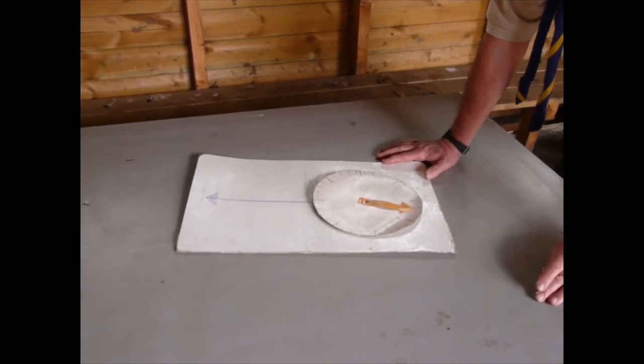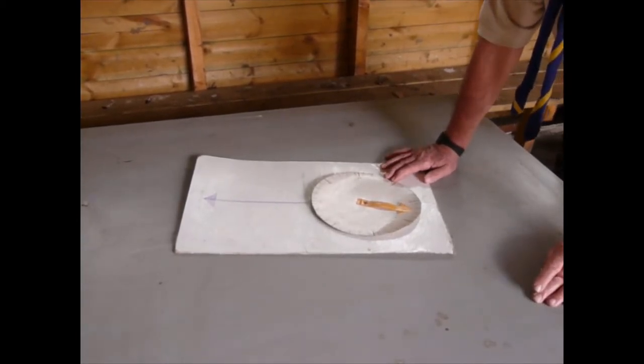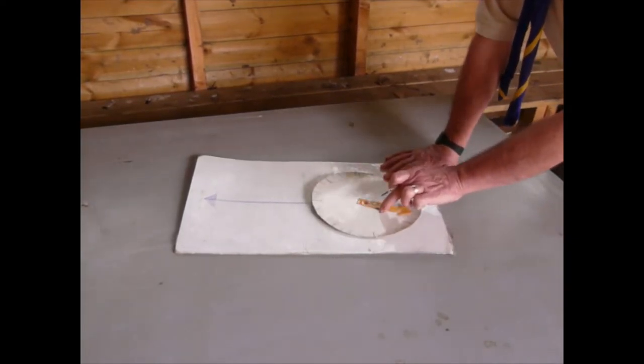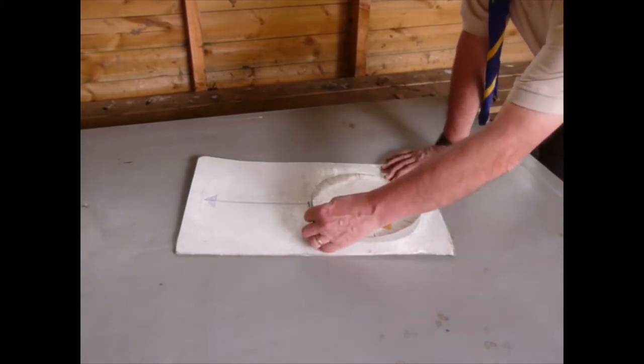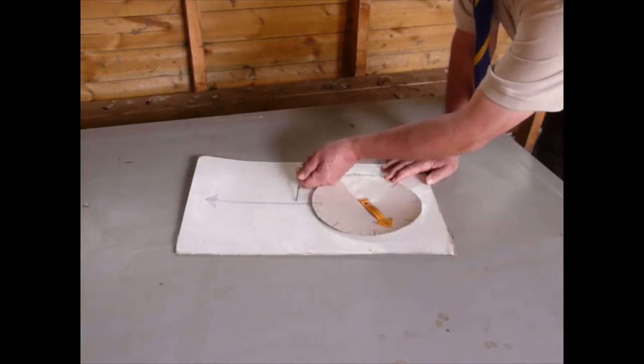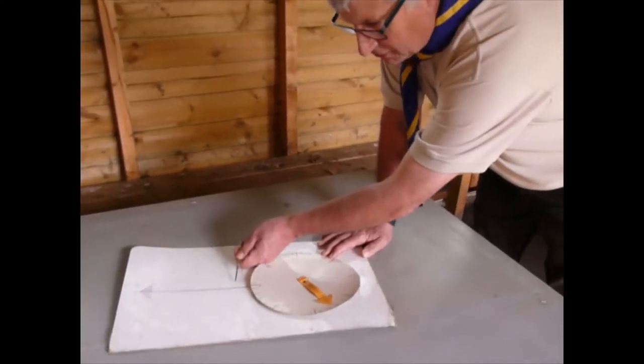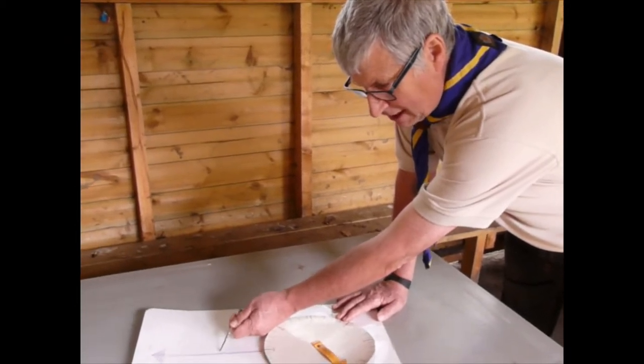The compass effectively consists of the needle itself, which is going to move in the magnetic field of the earth. This is the yellow thing here on this model. And then at the top here, a section where you have an arrow on the base.